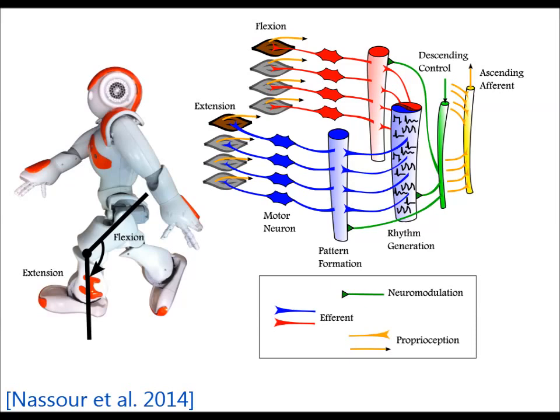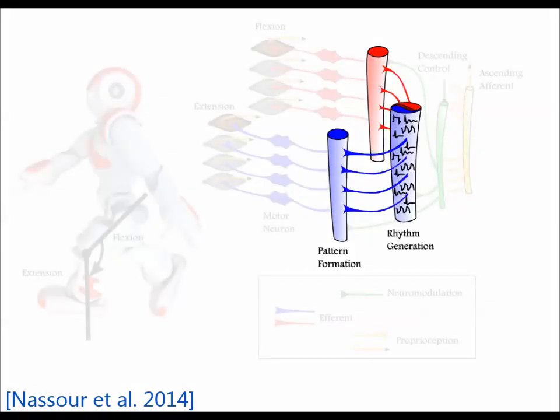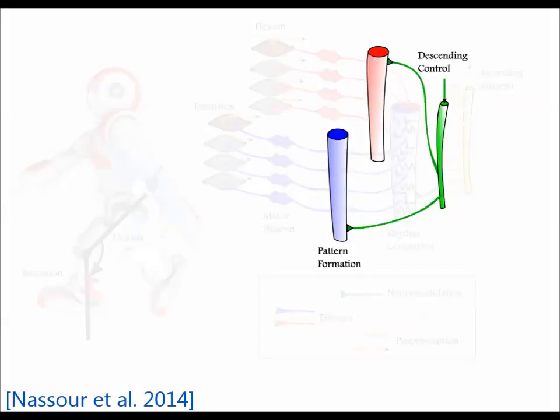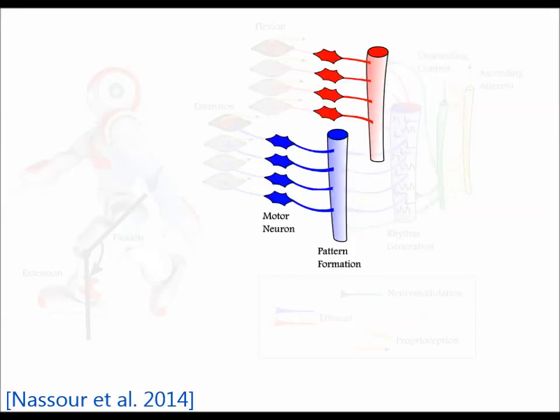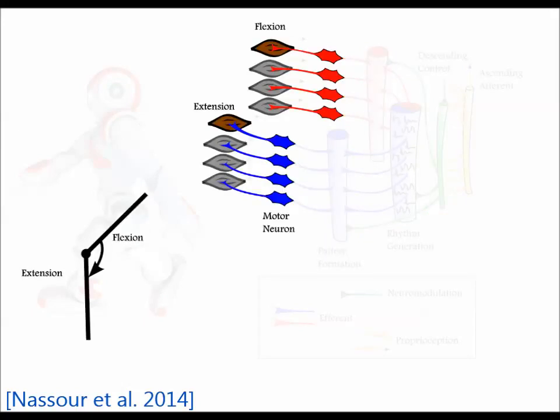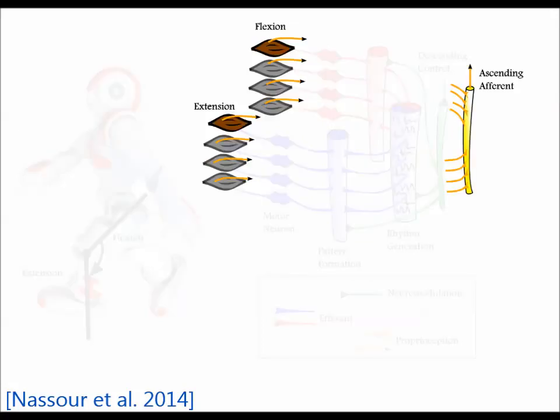The pattern formation layer is responsible for shaping the generated patterns. It receives descending signals from the high centers; these signals control the dominated rhythm at each joint. The sensory neurons provide proprioceptive and exteroceptive feedback into the CPG.